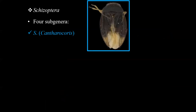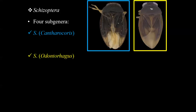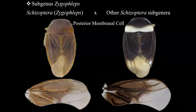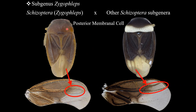Schizoptera is currently divided into four subgenera: Cantherochorus, Odontorhegas, Schizoptera, and, of course, the nicest subgenus — Zygoflaps. Now that you know what a Schizoptera is, you might be wondering how to identify Zygoflaps specimens. You just need to look at the forewing, basically at the posterior membranal cell. If it's triangular, you hit the jackpot — you've got Zygoflaps. But if it's rectangular, it could be any other Schizoptera subgenus. Basically, this is the easiest subgenus of Schizoptera to identify.